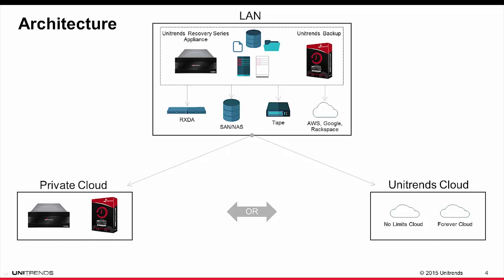Also within this model, the private cloud or Unitrends cloud is an added or optional layer of protection that can be enabled or activated later in the future. So if you initially provide on-premise protection within your local area network and simply use cold targets, at any point thereafter you can add the layer of the private cloud or Unitrends cloud for hot targets.